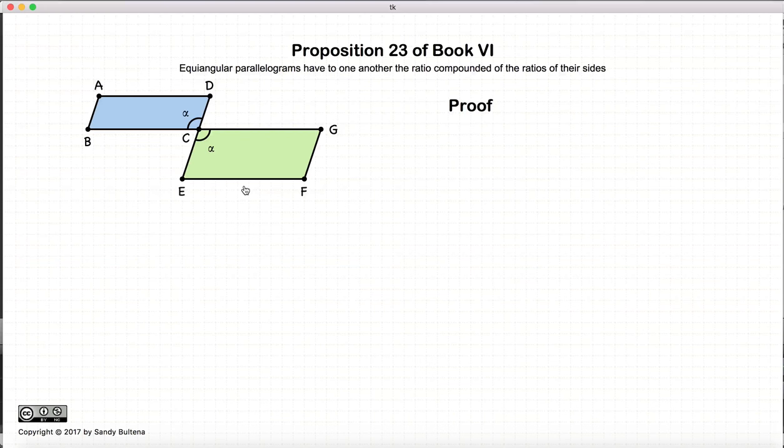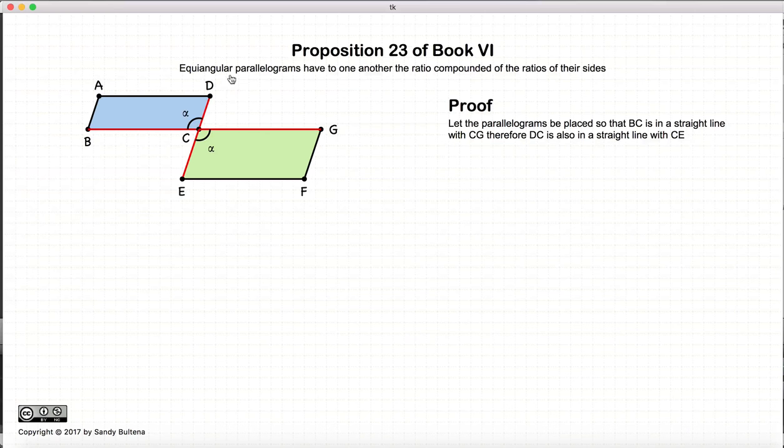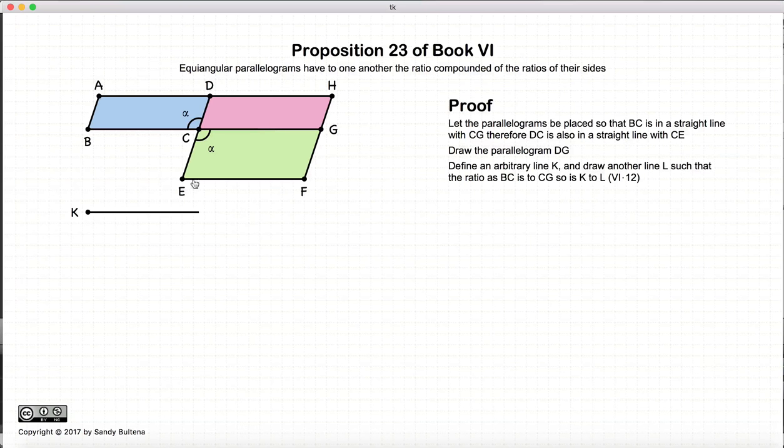So let's prove this. The first thing that we need to do is we need to line up our parallelograms so that - oh, I forgot to mention these are equal angular parallelograms. So because they're equal angular, we can line them up in such a way that DE and BG are straight lines. First thing we're going to do is draw out AD and draw out FG so that we create a new parallelogram, DG.